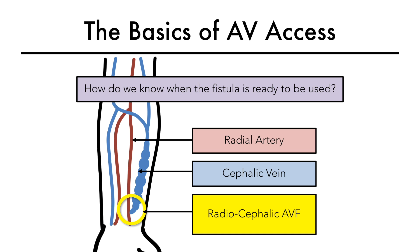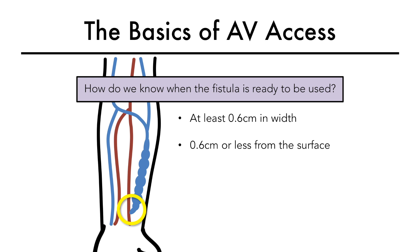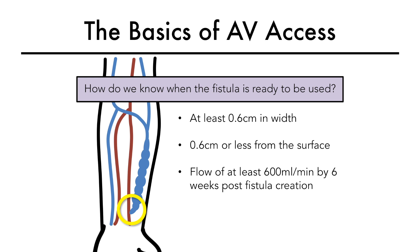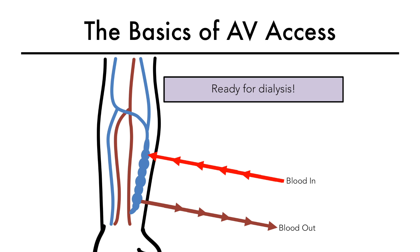According to the K-DOQI guidelines, a mature AV fistula is defined as one where the vein grows and develops at least 0.6 cm in width, is 0.6 cm from the surface, has an ultrasound flow of at least 600 mL per minute by 6 weeks post-fistula creation, and has a linear segment of at least 6 cm — ideally 10 cm — that will allow two needles to be placed a reasonable distance apart. This is the rule of 6s. The blood flow through the fistula of at least 600 mL per minute is important so it can sustain a standard blood pump rate of 400 mL per minute during dialysis.